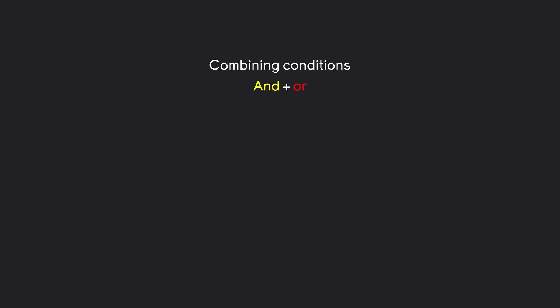Let's start with combining conditions. The two keywords we need are AND and OR. How this would look is: if 5 is smaller than 1 and E in hello, or 10 is different from 4. This may look confusing, but let's go through it one by one.